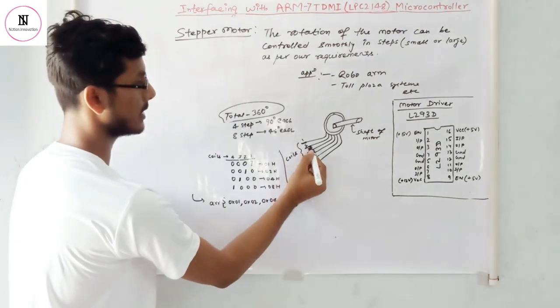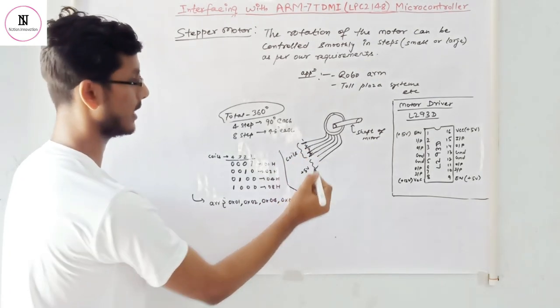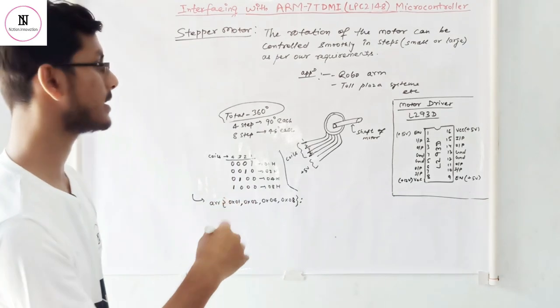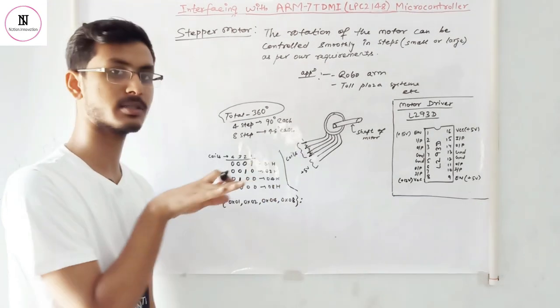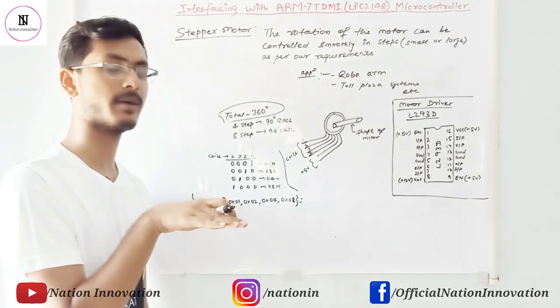Firstly, we are giving high to this, then this, then this coil, then this coil. In this way, the magnets of the stepper motor get magnetized and continue to rotate in the clockwise direction.